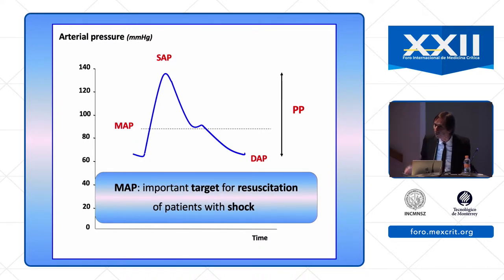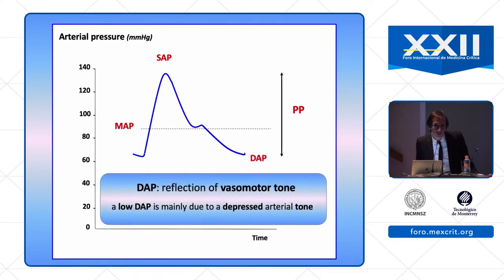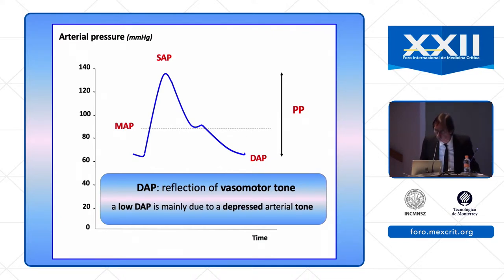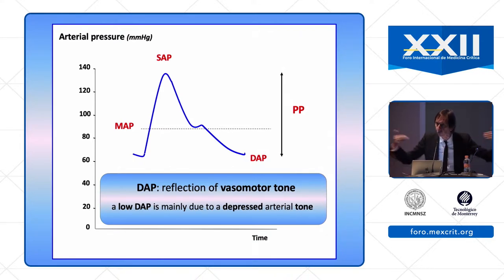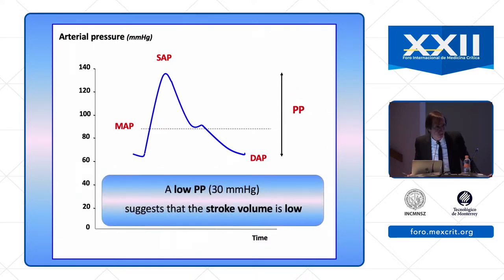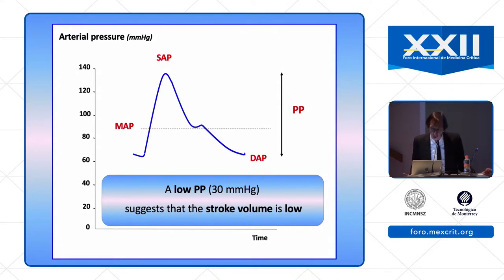Pulse pressure is the difference between systolic and diastolic pressure. A low pulse pressure — for example 30 mmHg — suggests that the stroke volume is low, because pulse pressure is directly related to stroke volume. You also can use the shape of the arterial pressure curve. As I said before, we can look at the variation during mechanical ventilation of pulse pressure — pulse pressure variation. A high PPV is associated with fluid responsiveness; a low PPV is associated with fluid non-responsiveness.